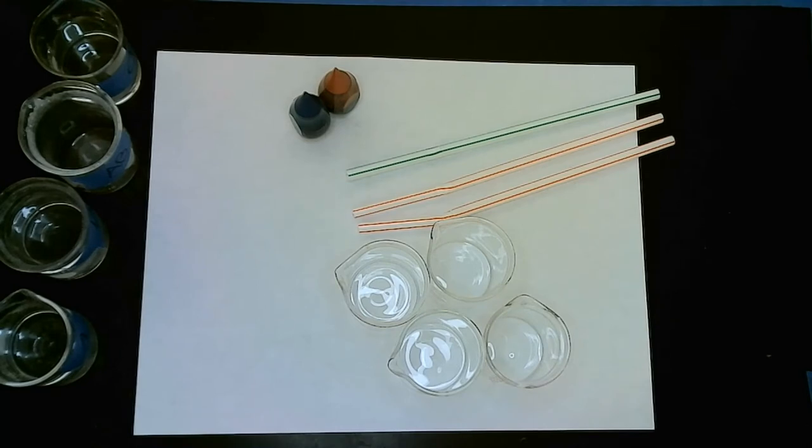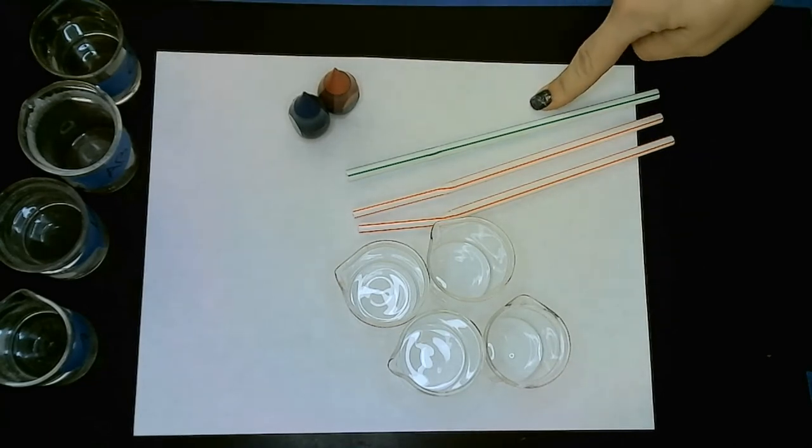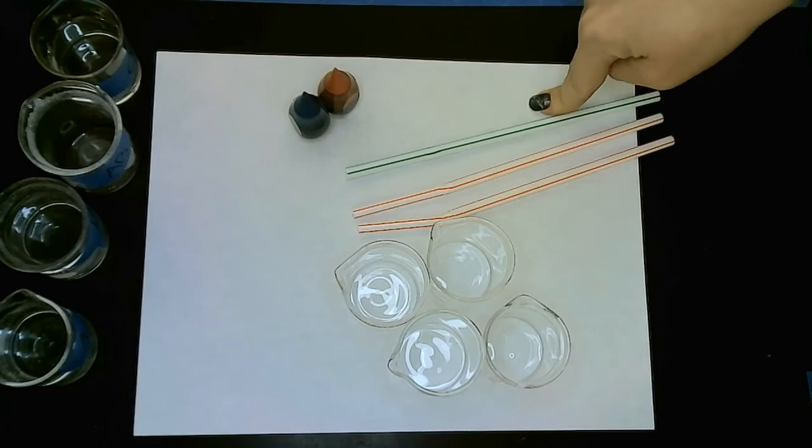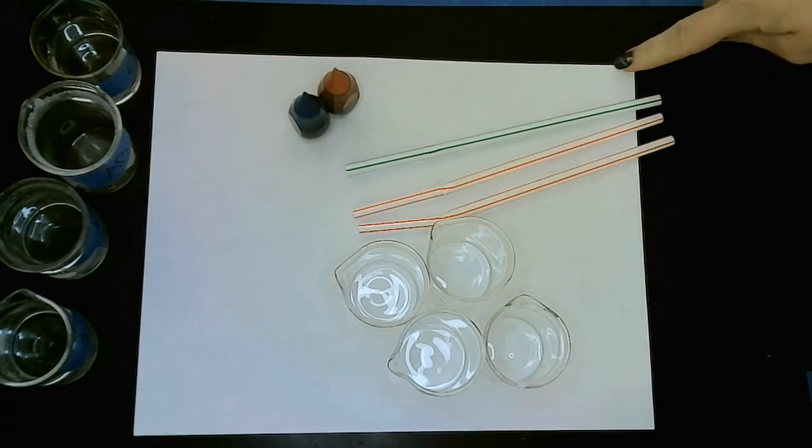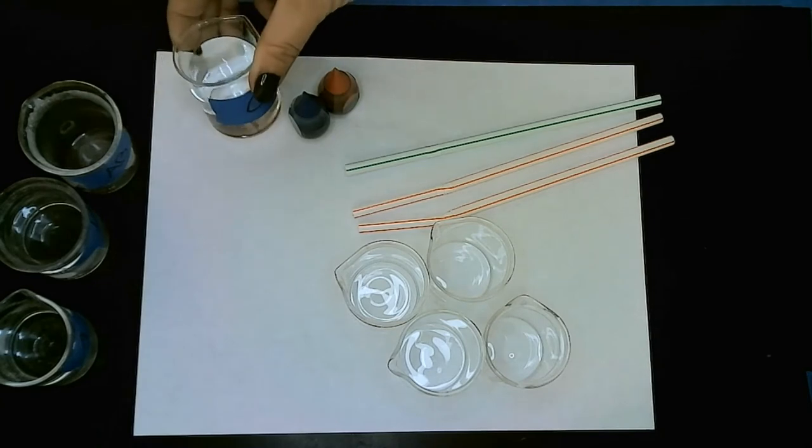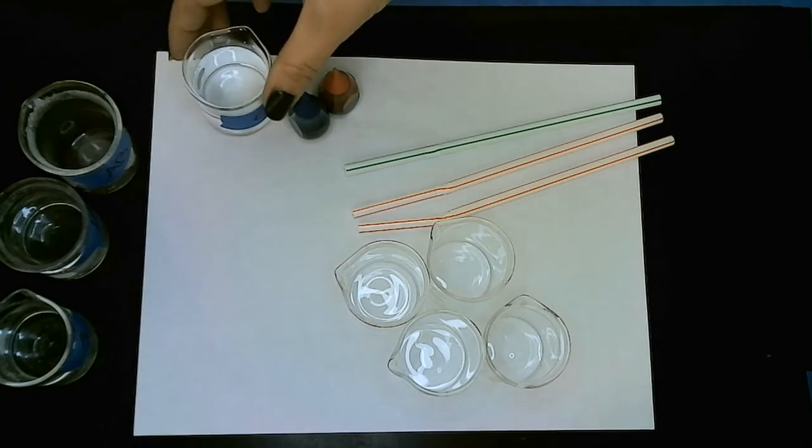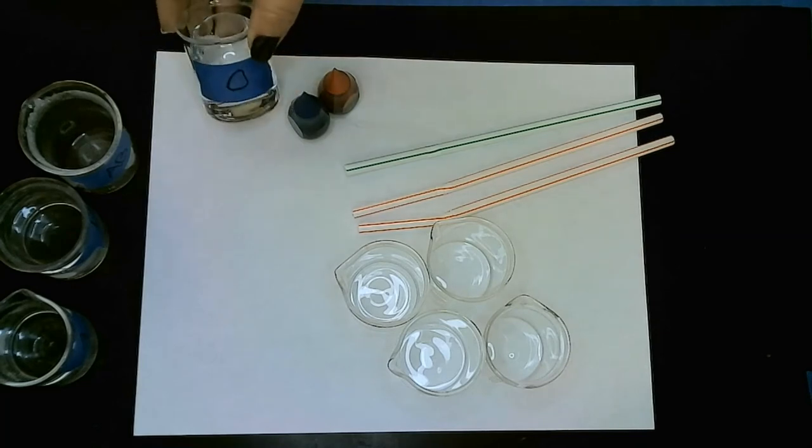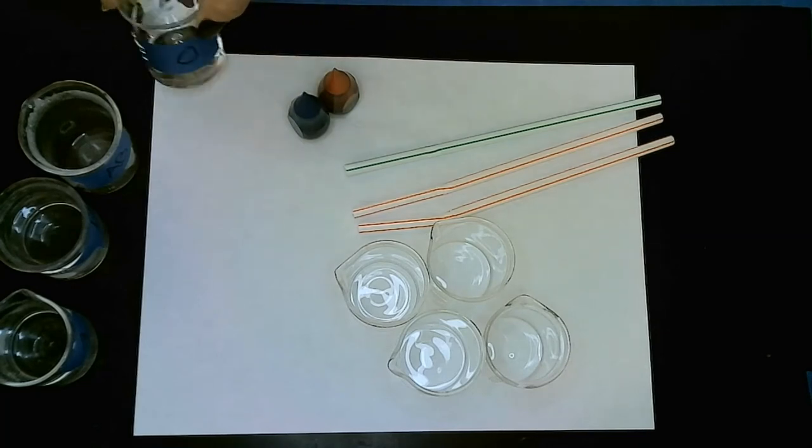Those are the materials you might need. I also have paper here just so you can have a white background and see the color change a little bit easier on this black top table. And then I've filled up three of these cups with water and I've labeled them each different blood types.